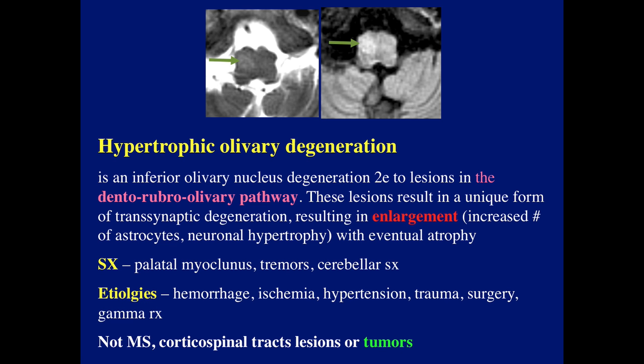Hypertrophic olivary degeneration is an inferior olivary nucleus degeneration secondary to lesions in the dentato-rubro-olivary pathway. These lesions result in a unique form of transsynaptic degeneration, resulting in enlargement — which is the result of increased number of astrocytes, neuronal hypertrophy — and eventually there will be atrophy. This is very unusual because of the enlargement.